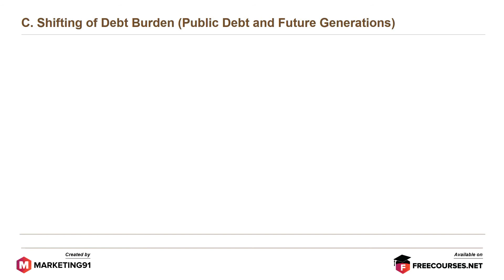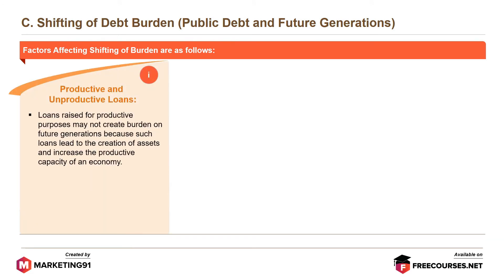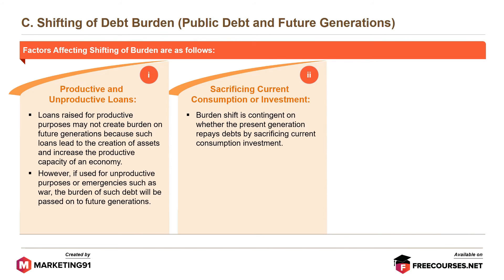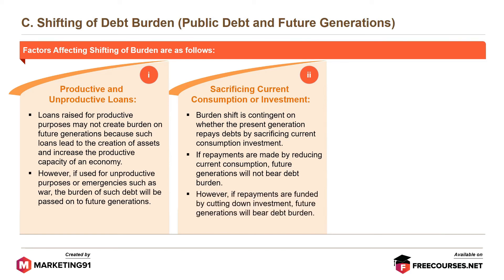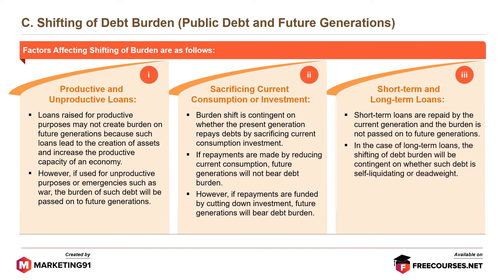Shifting of debt burden — public debt and future generations: Productive loans may not create a burden on future generations because they lead to asset creation and increase productive capacity. However, if used for unproductive purposes or emergencies such as war, the burden is passed on to future generations. If repayments are made by reducing current consumption, future generations will not bear the debt burden; but if repayments are funded by cutting investment, future generations will bear it. Short-term loans are repaid by the current generation, while for long-term loans, the shifting depends on whether such debt is self-liquidating or deadweight.